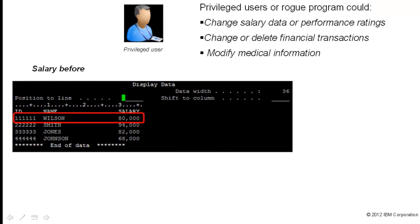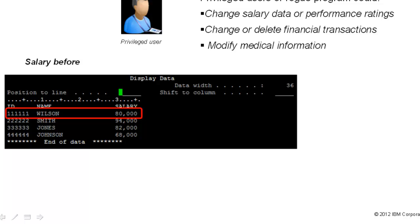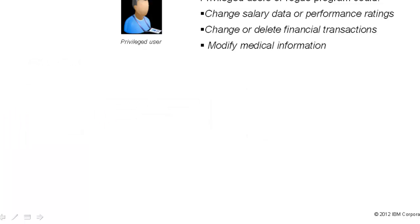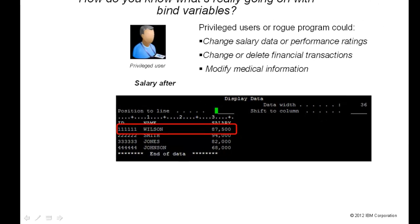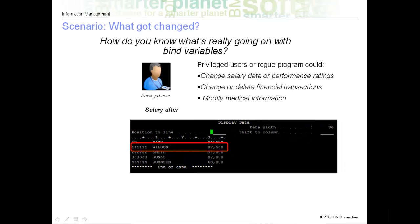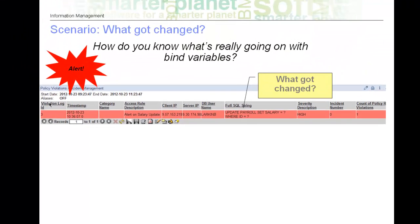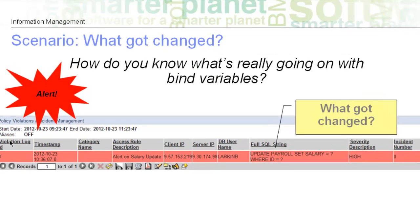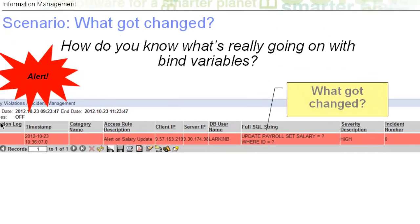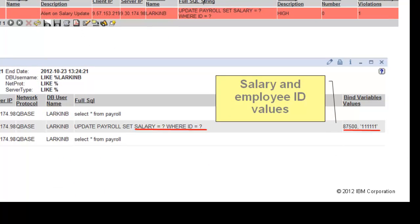In this scenario, our privileged user gives one of his buddies an unauthorized raise from $80,000 to $87,500. Luckily, we are alerted when privileged users change this table, so it comes to our attention quickly. We can't tell for sure what data got changed, so we can go to the SQL activity report and see the actual change that was made to the salary.